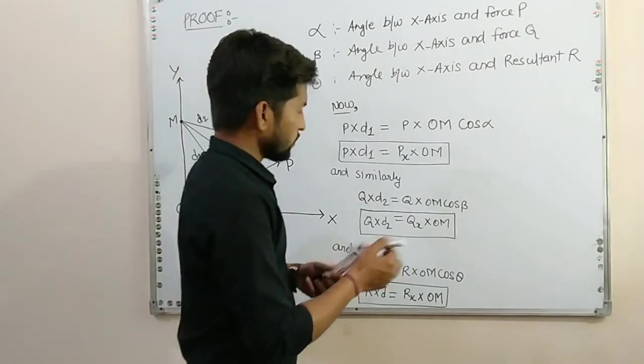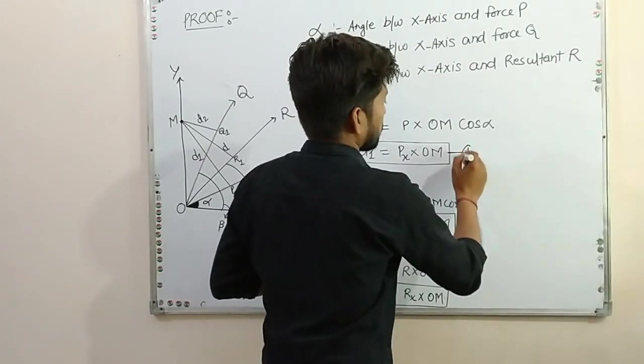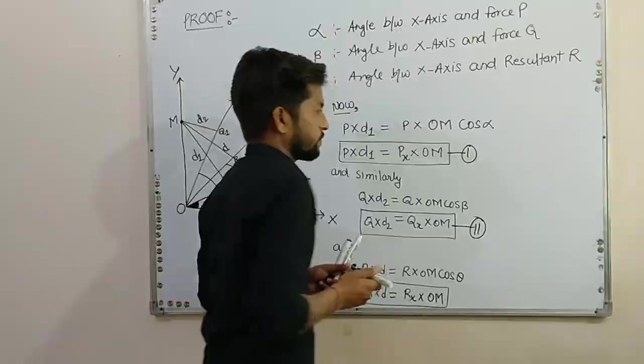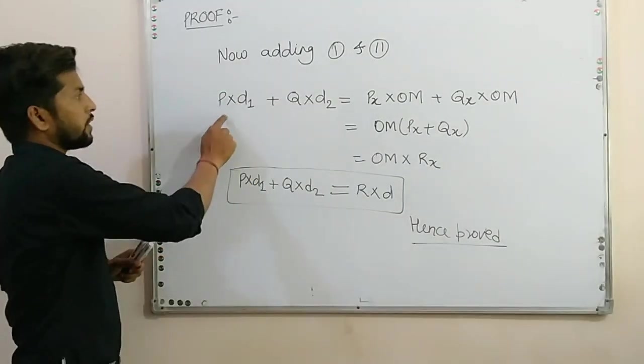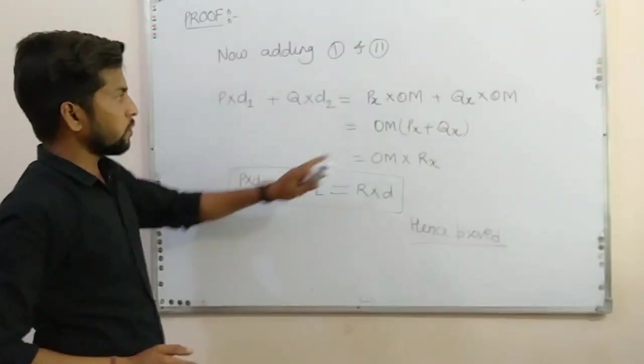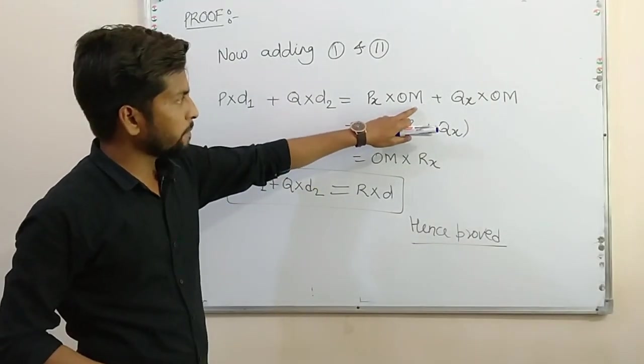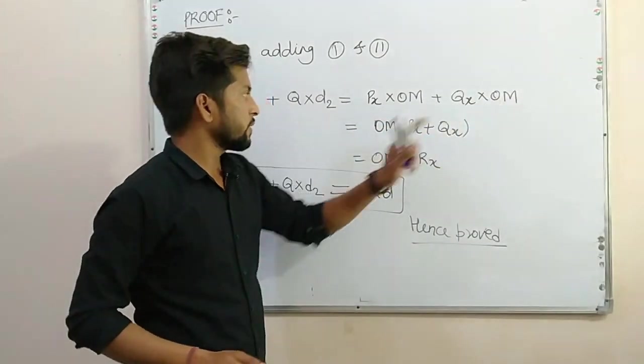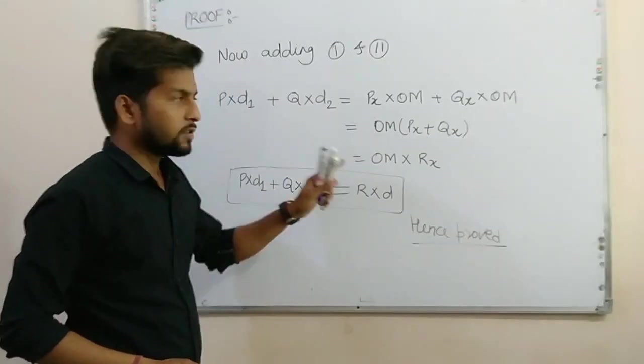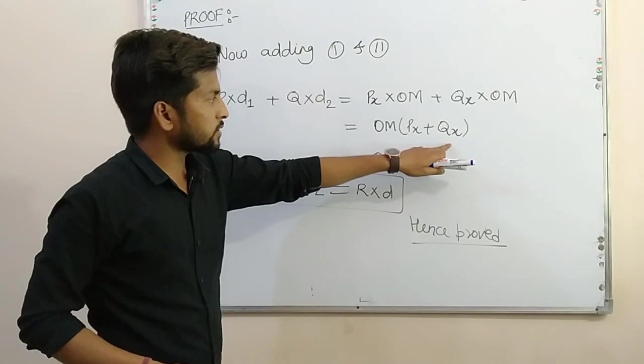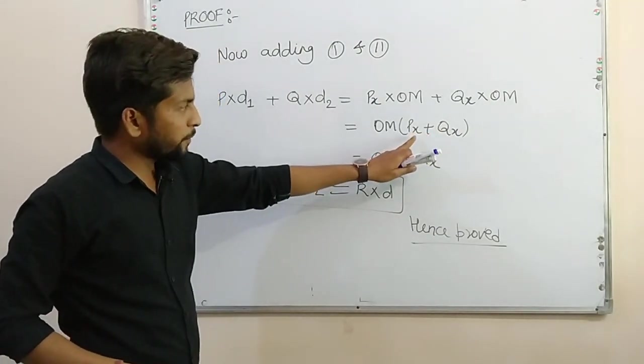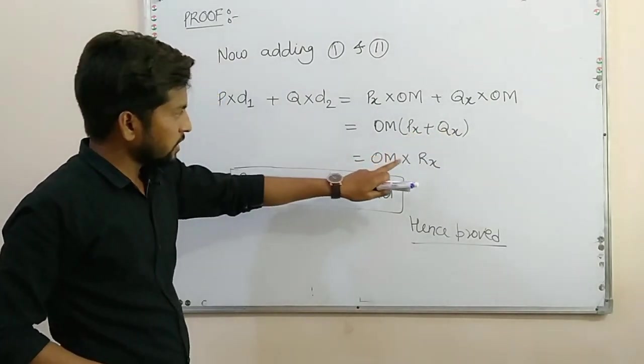So now, adding equation 1 and 2. P into D1 plus Q into D2 equal to Px into OM plus Qx into OM. OM is common out. In the bracket, we have Px plus Qx. And the resultant of Px plus Qx is Rx.